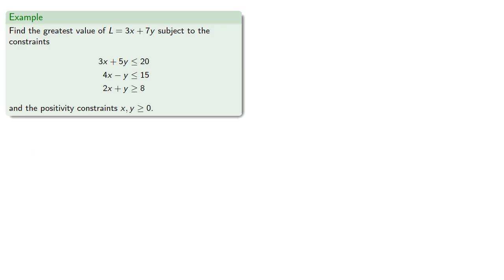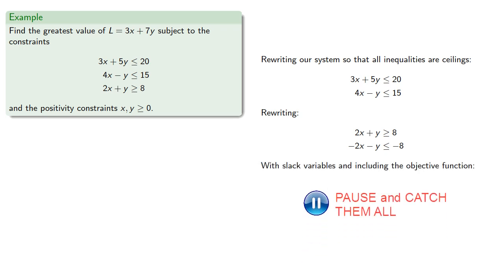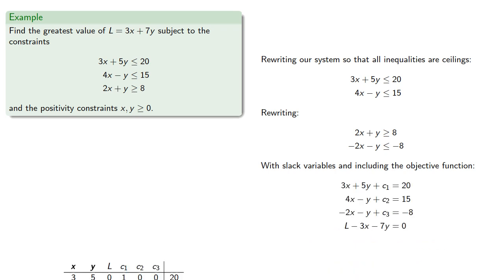Let's try to find the greatest value of an objective function subject to some linear constraints. So we'll rewrite our system so that all inequalities are ceilings. The first two inequalities are already less than or equal to. Rewriting our third inequality by multiplying through by negative 1, with slack variables and including the objective function, produces our initial tableau.